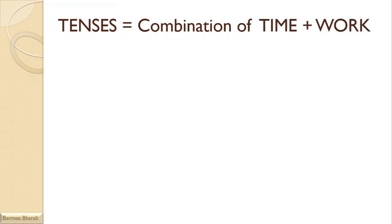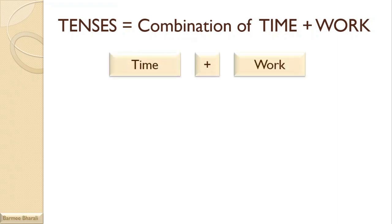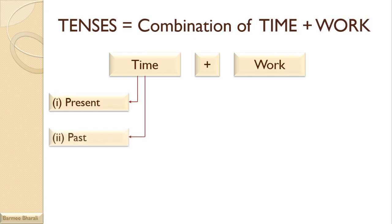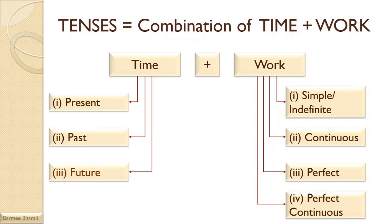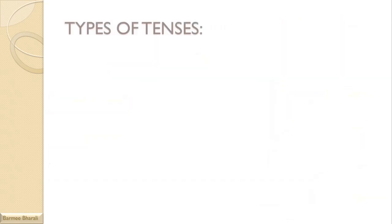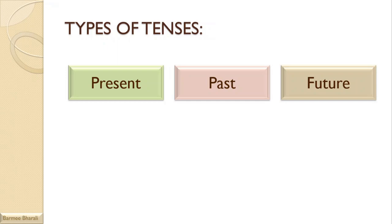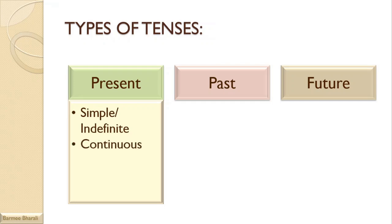From the definition of tense we learn that tense has time and work in it. We get time as present, past, and future, while on the other hand, work has its own aspects: simple, continuous, perfect, and perfect continuous. From this we get the types of tenses — present tense, past tense, and future tense — each having similar aspects: simple, continuous, perfect, and perfect continuous.